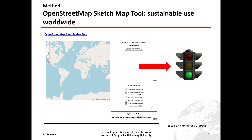Therefore, we decided to do our own tool — the OpenStreetMap Sketch Map Tool — because there was no software developer in charge anymore for the OpenStreetMap field paper homepage. And in this tool, which you can see the current design of here, you have the option to select your study area and then you will get feedback on the quality of the OSM data. You will get, for example, a green light, and then you know the data quality is enough for your mapping.